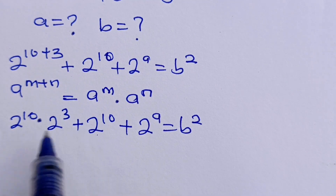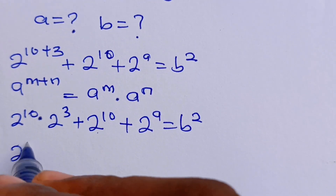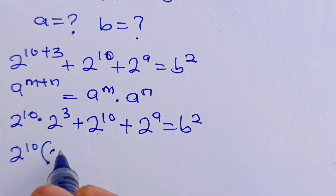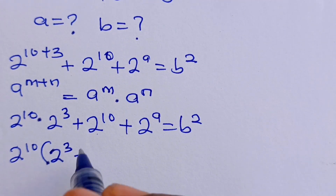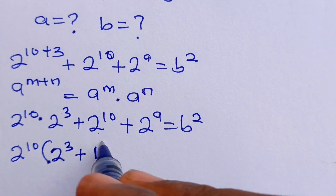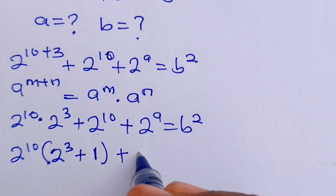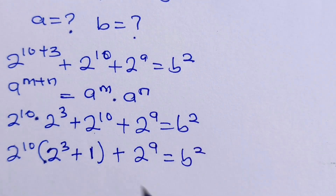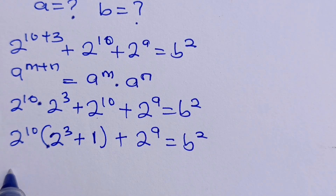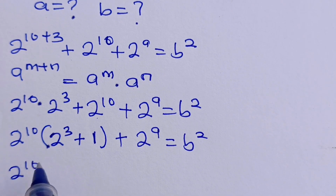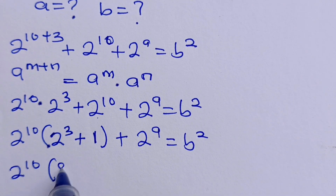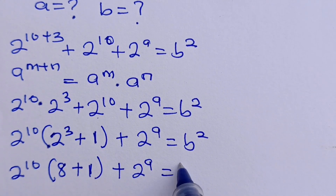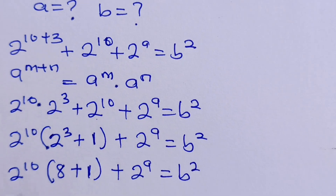Now we can factorize 2 to the power of 10 out. So we have 2 to the power of 10 in brackets: when this is divided by this we have 2 to the power of 3, plus when this is divided by itself we have 1, plus 2 to the power of A is equal to B squared. Now, 2 to the power of 10 multiplied by 2 to the power of 3 is 8, plus 1, plus 2 to the power of A is equal to B squared.